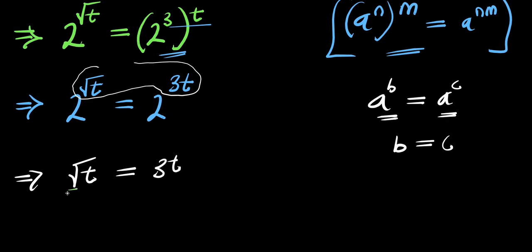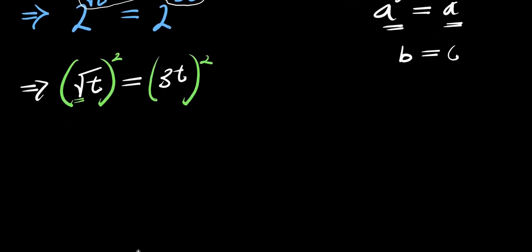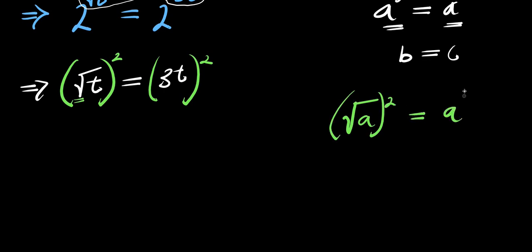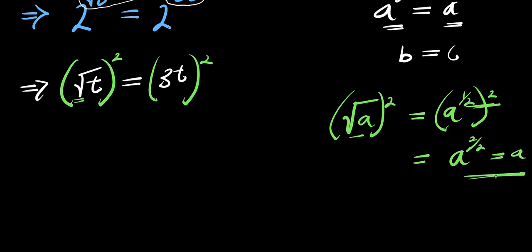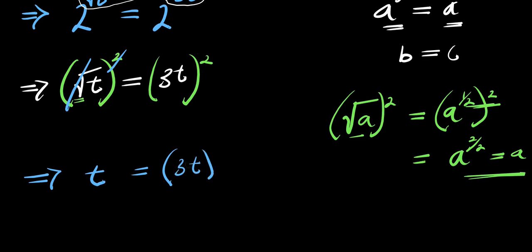Now there is a square root here, so we can decide to eliminate this by squaring both parts of this equation. Consider the fact that if you have square root of a and you raise it to the power of 2, this is just like writing a to the power of 1 over 2, raised to the power of 2. If you multiply this exponent out, you will simply have a to the power of 2 over 2, which equals a. So applying that here, we are simply going to have t equals 3t raised to the power of 2.